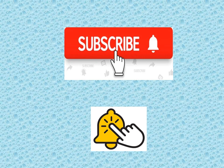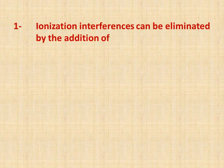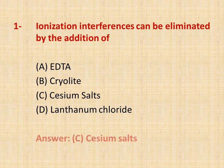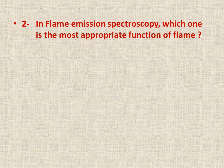Question number one: ionization interferences can be eliminated by the addition of — options: A is EDTA, B is cryolite, C is cesium salts, D is lanthanum chloride. The right answer is C, cesium salts. By the addition of cesium salts, ionization interferences can be eliminated.